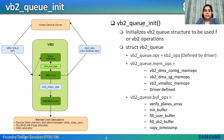VB2 queue init is the first function in terms of VB2 operation called from the driver to the VB2 framework. It initializes the VB2 queue which the driver will use throughout its run cycle. The struct VB2 queue is allocated by the driver, which must clear its content and set initial values before calling this function. Queue ops, queue memops, queue type, and queue IO modes must all be set before calling VB2 queue init.